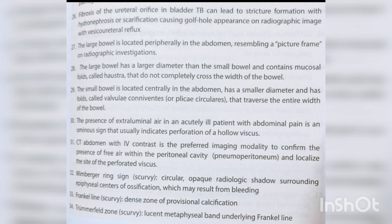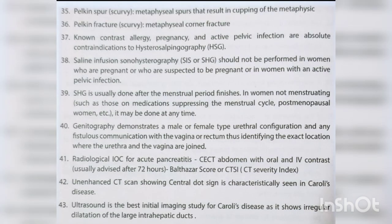CT abdomen with IV contrast is the preferred imaging modality to confirm pneumoperitoneum and localize the site of perforated viscus. Wimberger's ring sign — curvilinear opaque radiologic shadow surrounding epiphyseal centers of ossification, which may result from bleeding. Frankel line — scurvy, denser zone of provisional calcification. Trümmerfeld zone — scurvy, lucent metaphyseal band underlying Frankel line. Pelican spur — scurvy, metaphyseal spurs resulting in cupping of the metaphysis.